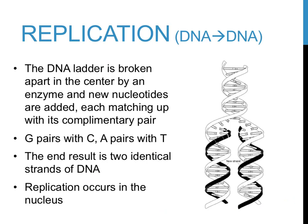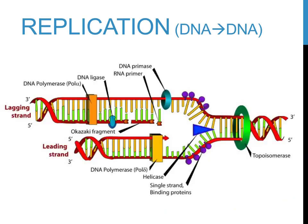DNA replication occurs in the nucleus, as that is the location within eukaryotic cells where DNA is always found. The process of DNA replication involves many proteins and is actually quite complex. There is a separate video that will discuss the specifics of this process, which is entitled DNA Replication.